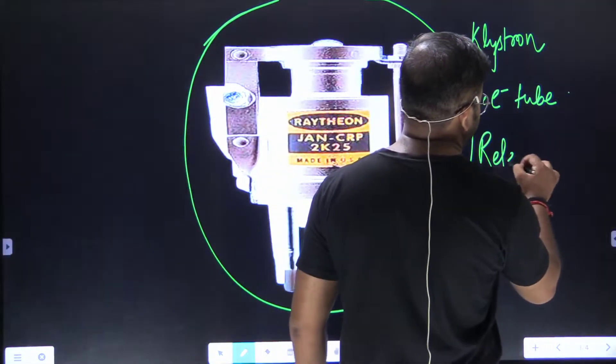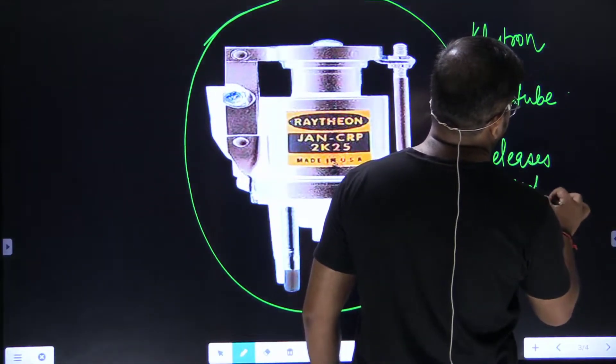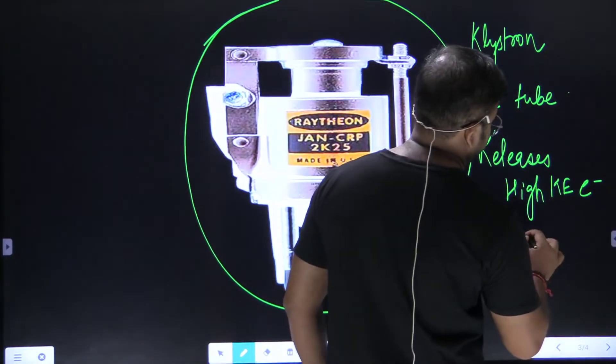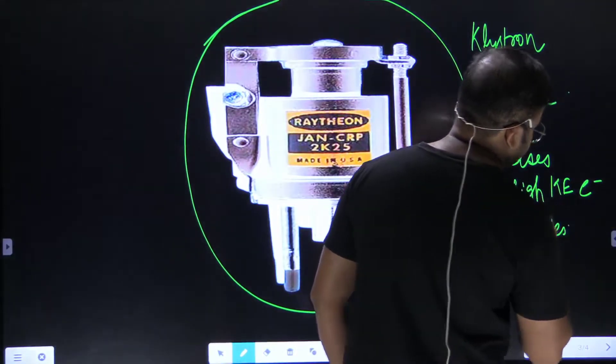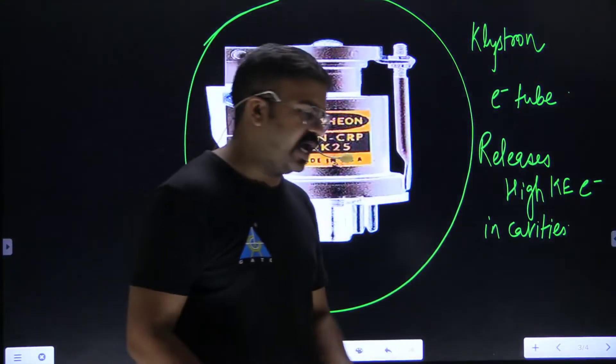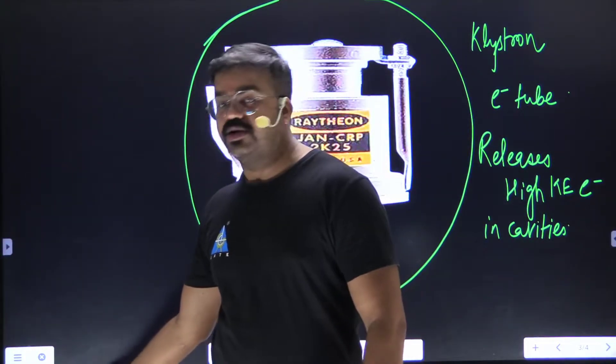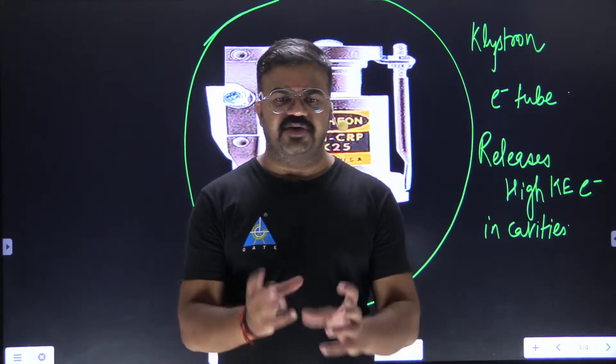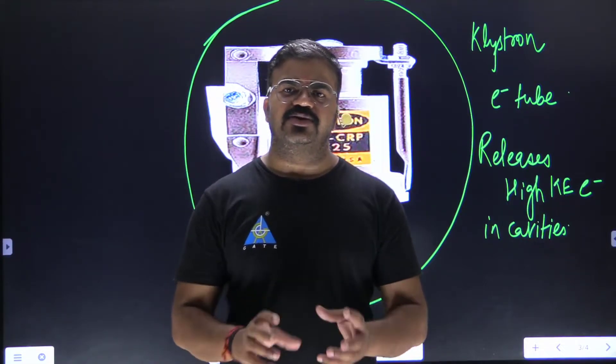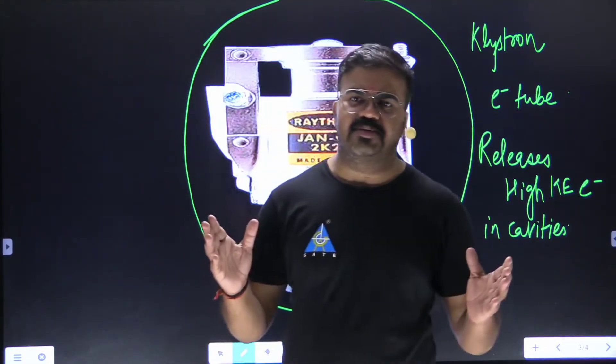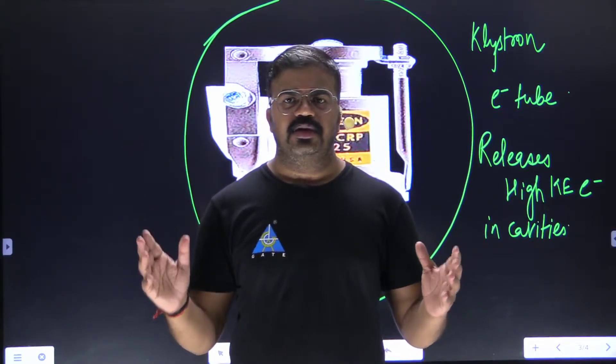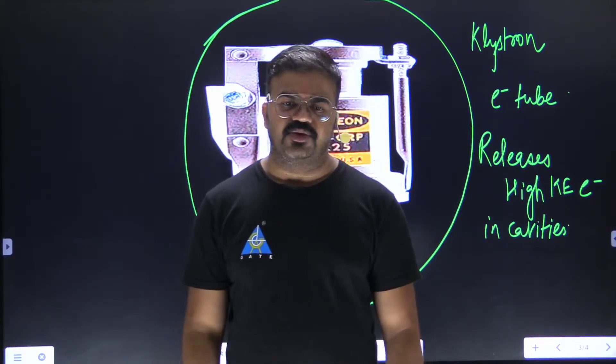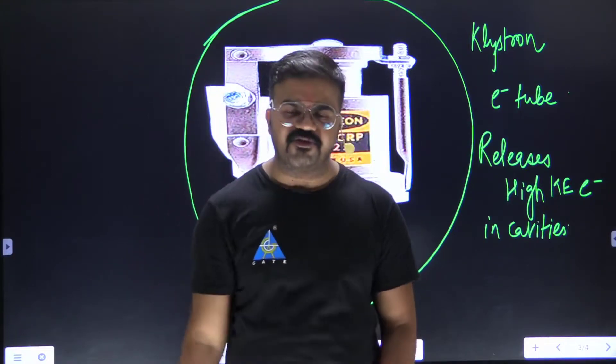It contains electron tube. It releases high kinetic energy electrons in cavities. So in the path of flow of electrons there are cavities. Now what happens when this high kinetic energy electron is passing through cavities? It leads to the resonation of the cavities. Cavities start resonating. When the cavities are resonating, they are resonating at a frequency, hence they are releasing some energy. That energy is in the form of microwaves.